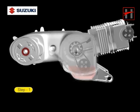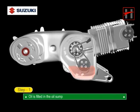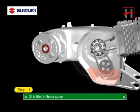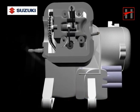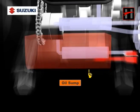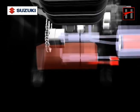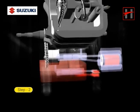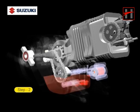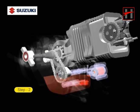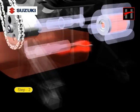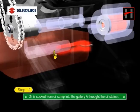Step 1: Oil is filled in the oil sump. Step 2: As the engine starts rotating, the oil pump also rotates and oil is sucked from the oil sump into gallery A through the oil strainer.